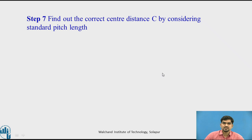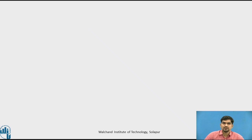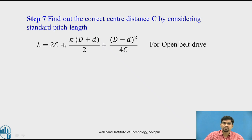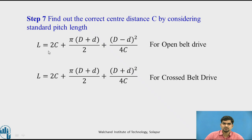Step 7: Find the corrected center distance C by considering the standard pitch length. Since we changed the pitch length to the standard value, we substitute that standard pitch length L back into the center distance equation. For an open belt drive we use one equation; for a cross belt drive we use a different equation.